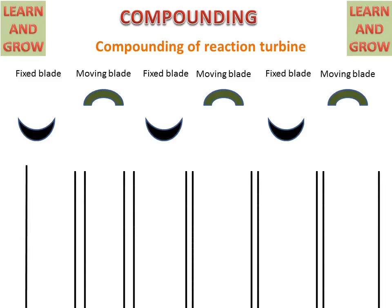Looking at the graphs of velocity and pressure in reaction turbine compounding: when steam is redirected from the fixed blade to the moving blade, its velocity increases, because fixed blades work like a nozzle and pressure decreases in the fixed blade. The blades of reaction turbines are designed so that pressure reduces in all stages, whether fixed blade or moving blade.